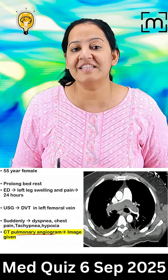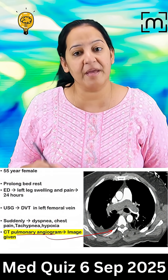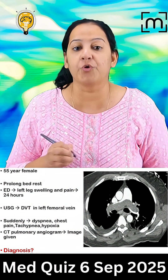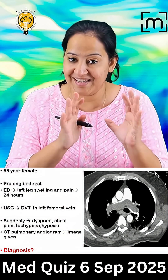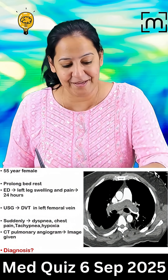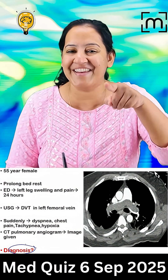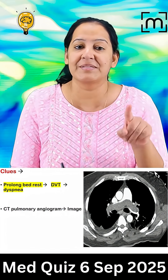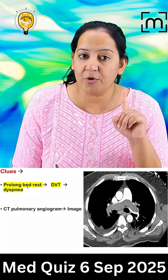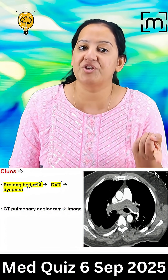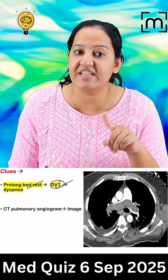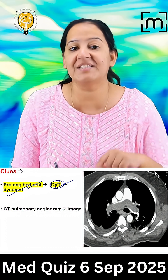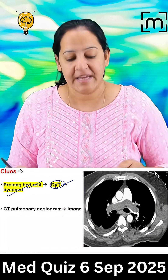Now the CT pulmonary angiogram image is provided to you. Based on the typical history and the typical image provided to you, can you make out the diagnosis? Let me give you the clues. After prolonged bed rest, the patient presented with DVT, and after that she is having dyspnea.